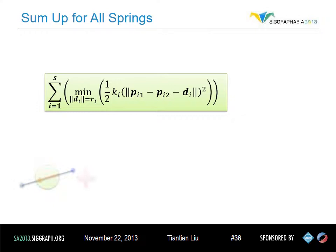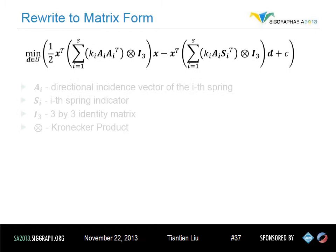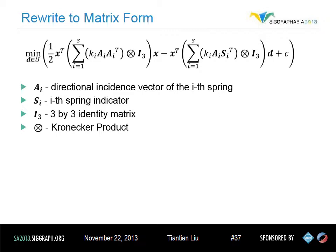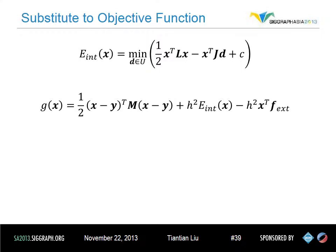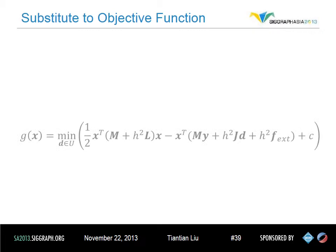After rewriting the potential energy per spring, we sum up all the springs to get the total potential energy of the entire system. We then rewrite the total potential energy into a perfect quadratic term — details of the derivation can be seen in our paper. We aggregate the constant matrices into L and J. Note that L is nothing but a stiffness-weighted Laplacian matrix of the system, so it is guaranteed to be positive semi-definite. Also, as long as the connectivity of the spring network and the stiffness of each spring do not change, L and J will both be constant.